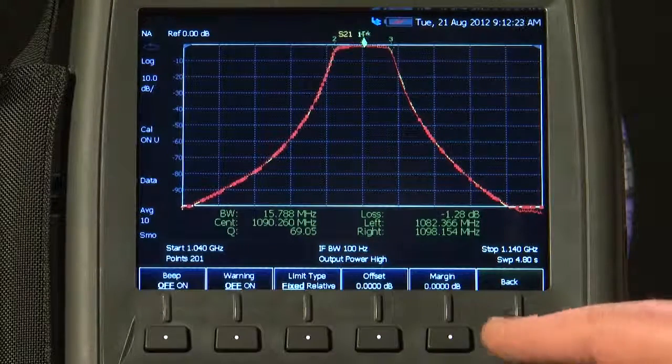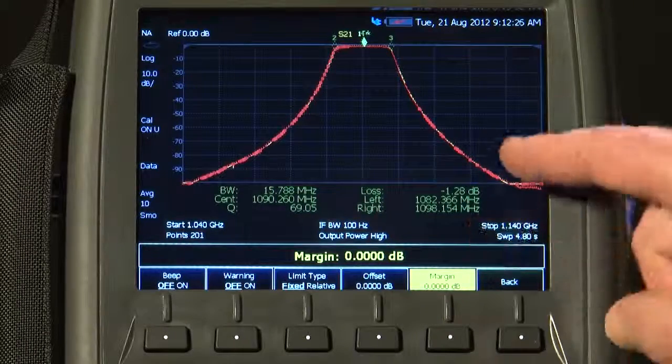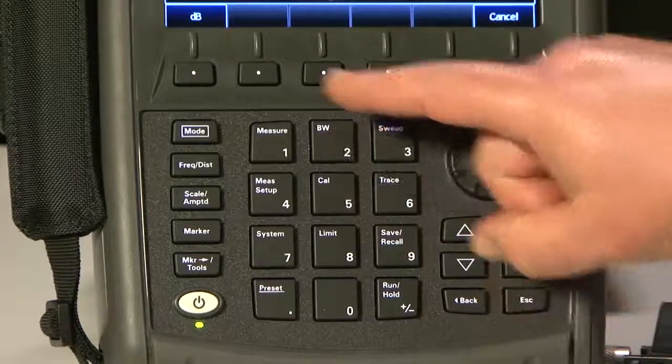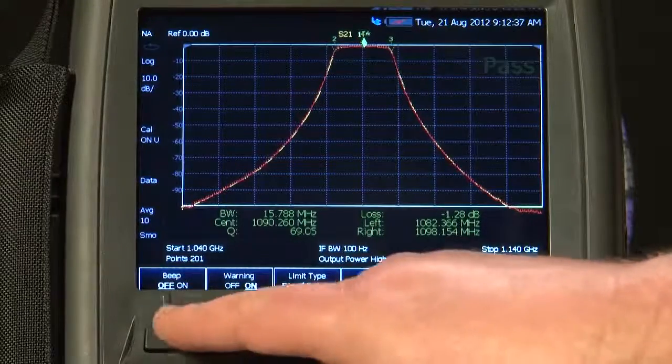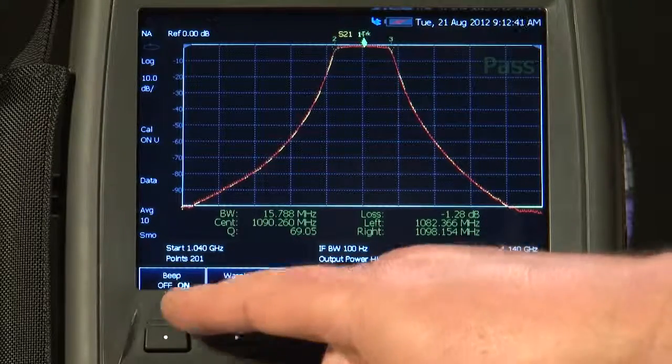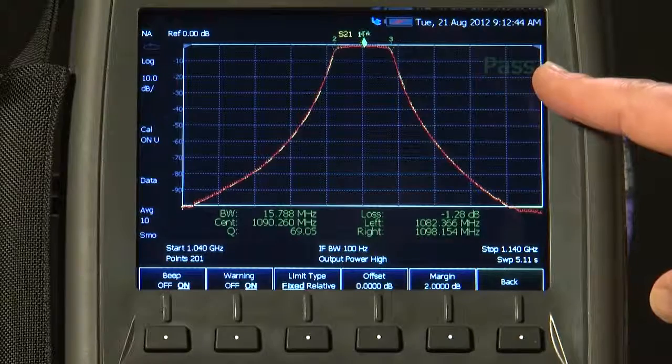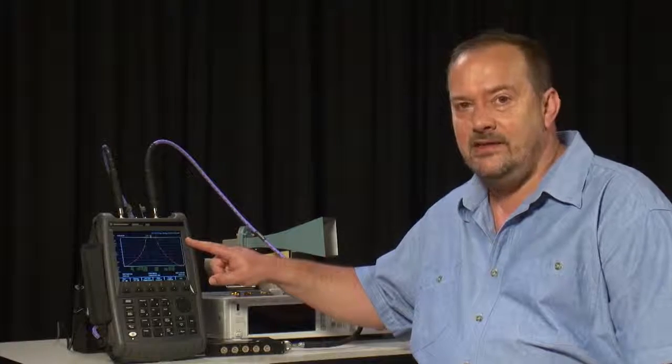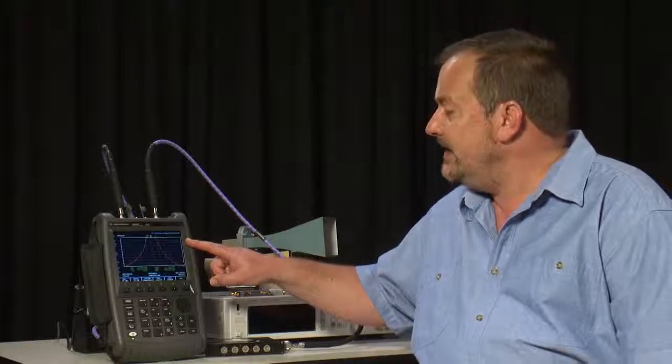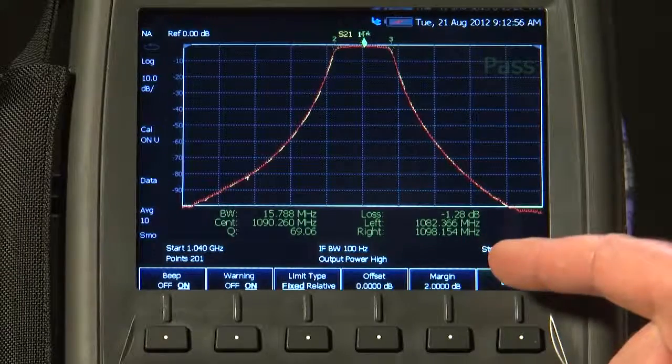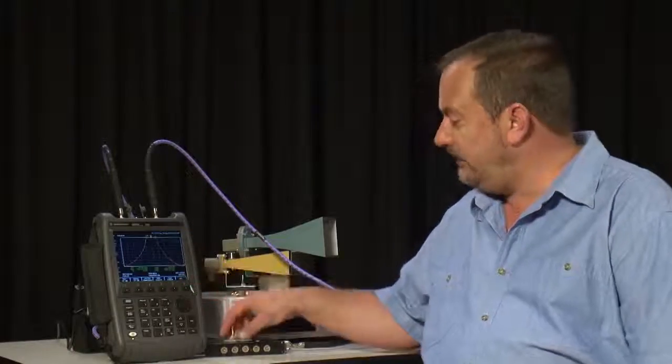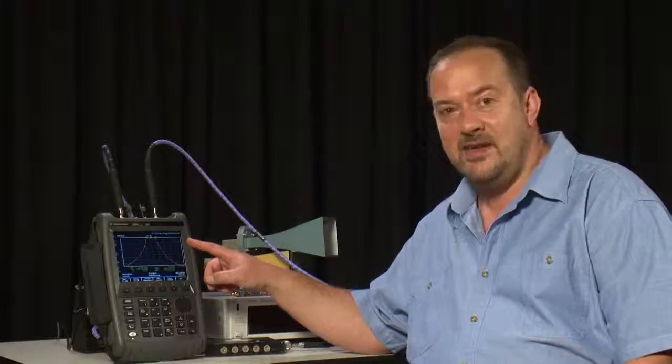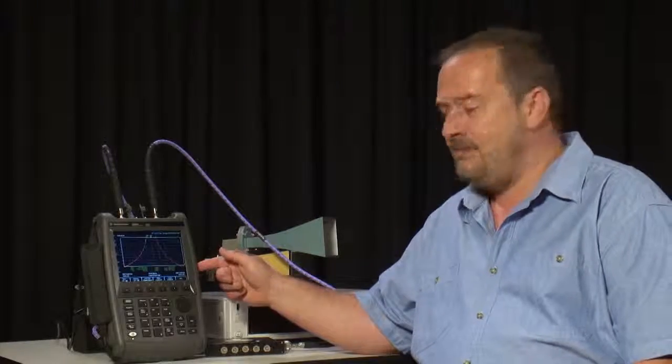Here you can see it has created the table of limit lines. I will exit from there and turn the limits on. Under Options, I can set a margin. If we say this filter has to look like that shape but within 2 dB, and I turn the warning indicator and the beep on, you will see that the filter obviously passes because this is the golden standard. But if you have a technician or someone out in the field who has to tune up these filters on a regular basis, you can save these limit line settings, recall that, and then the operator just has to adjust the filter until they get the pass indication on the screen.